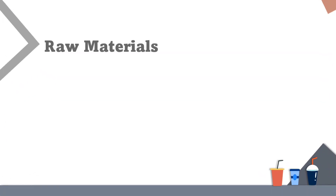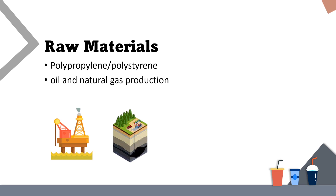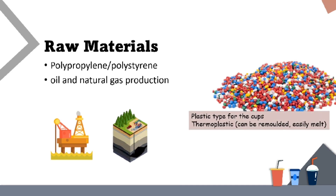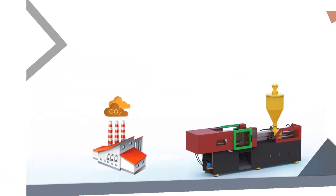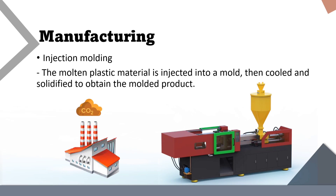The raw materials needed to produce plastic cups are polypropylene or polystyrene, which are made from oil and natural gas. The plastic type for the cup is thermoplastic, which can be remolded and easily melted for production. In manufacturing, injection molding is used to produce the cups — the molten plastic material is injected into a mold, then cooled and solidified to obtain the molded product.